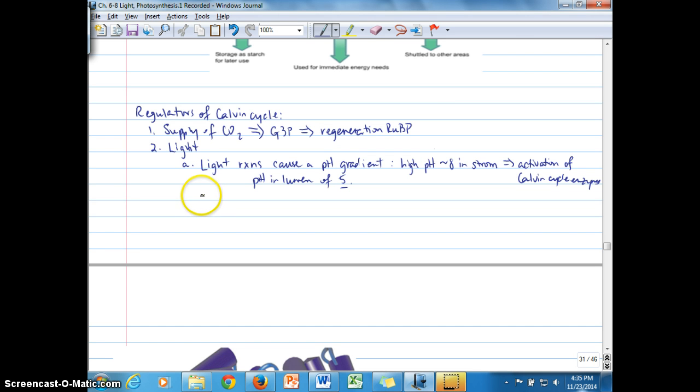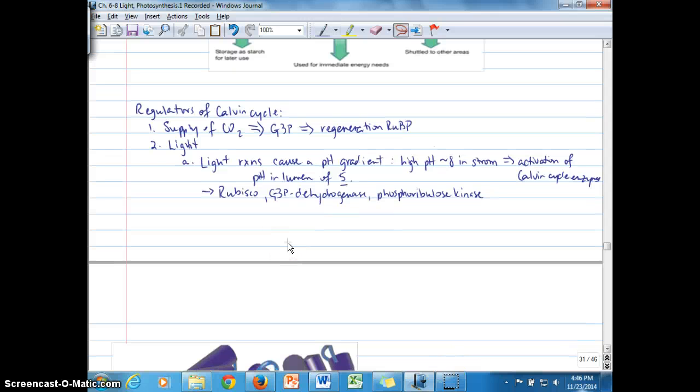The enzymes that are activated in the Calvin cycle by a pH of around 8 include rubisco, as well as G3P dehydrogenase, and phosphoribulose kinase. Those are three that we're going to discuss that are regulated or activated by a pH of 8 in the stroma. That's one way that light activates, or rather, regulates the Calvin cycle by activating these enzymes.